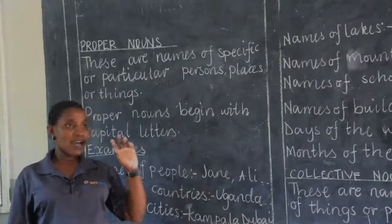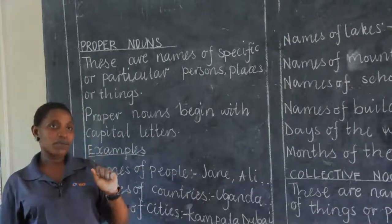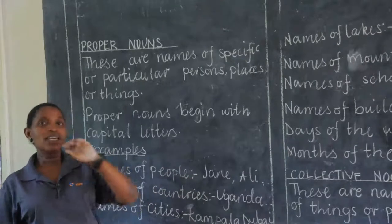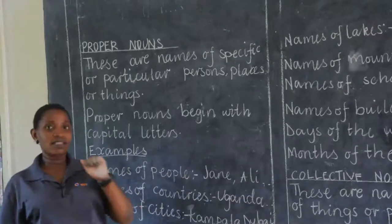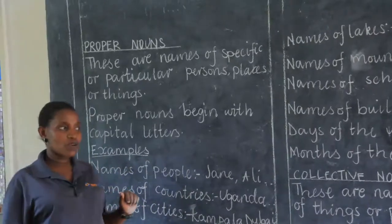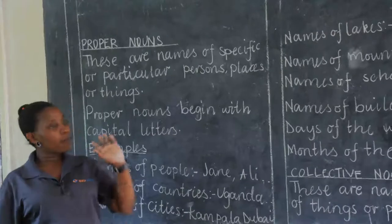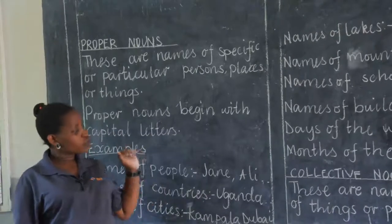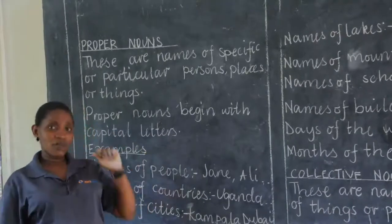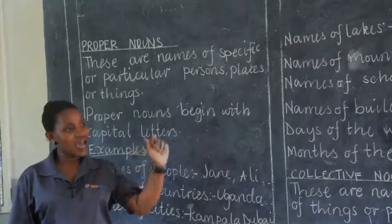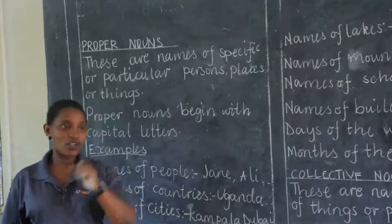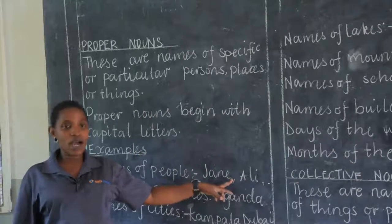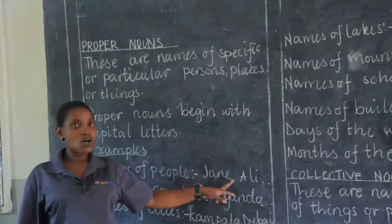When you say 'girls,' they will come. But when you want to mention a particular girl and you say Jane, that is now a proper noun. When you say 'boys,' they will come. But when you want to mention a particular boy, you will say 'Ali, come here.' That is now a particular noun. You have to begin with a capital letter.